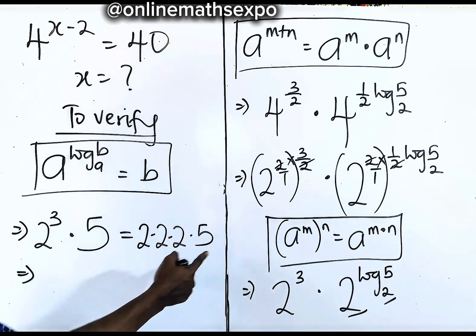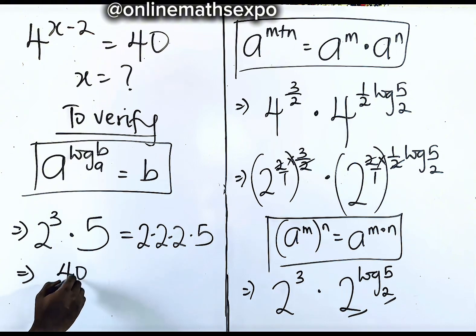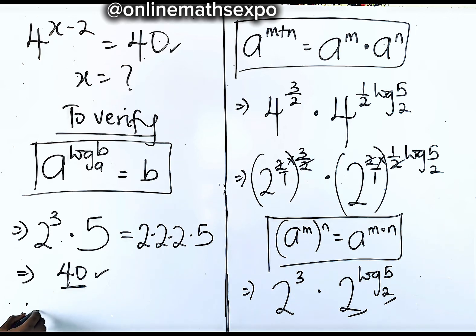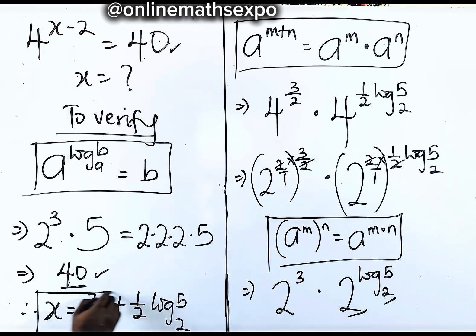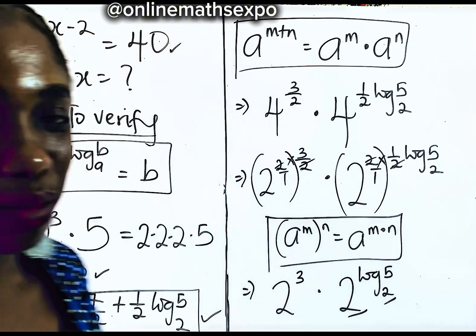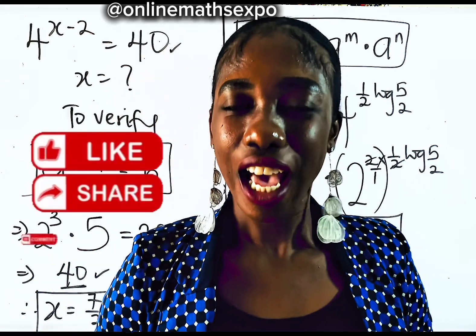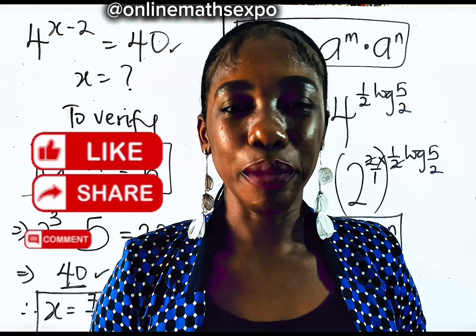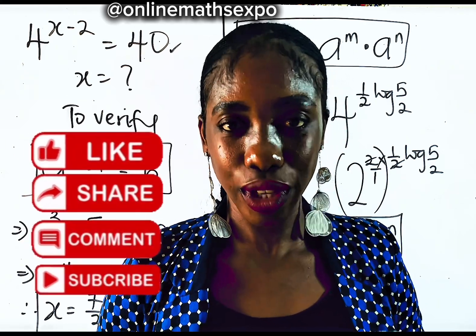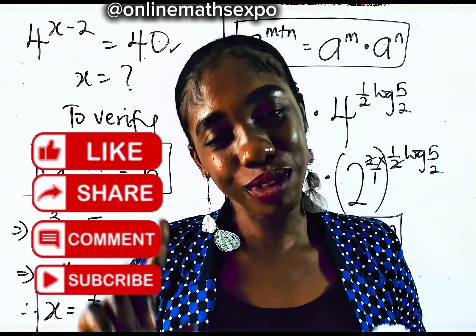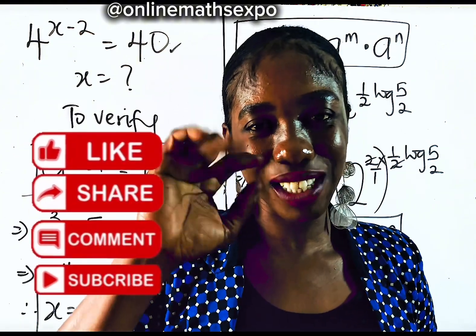So we have 2 cubed times 5, which is 8 times 5, which is 40 — and that is exactly what we have on the right side. So we can conclude that x equals 7/2 plus (1/2)log₂5 is absolutely correct. I hope you really learned something today. Don't forget to give this a like, and I'd be curious to see your own method in the comments. If you're still new, hit the subscription button. See you in my next class — bye-bye.